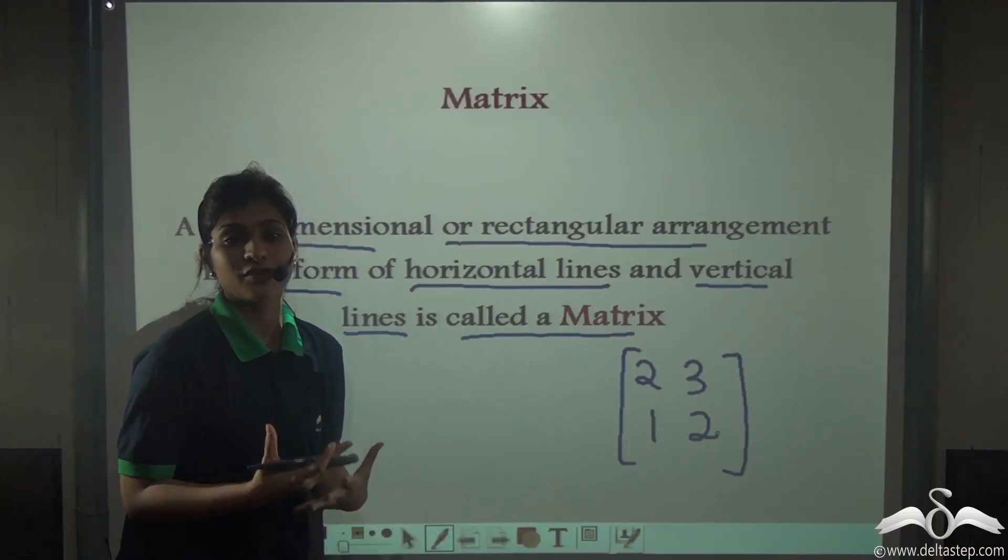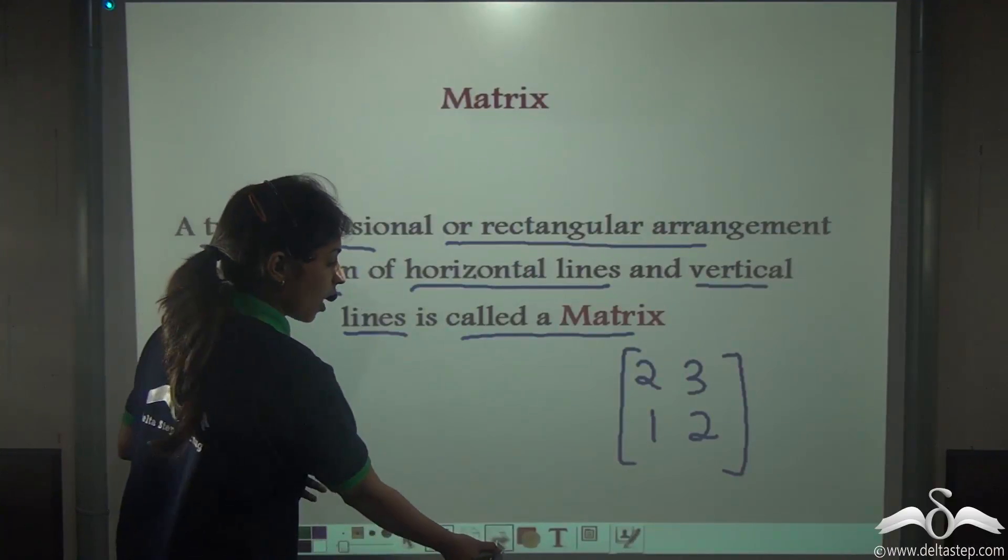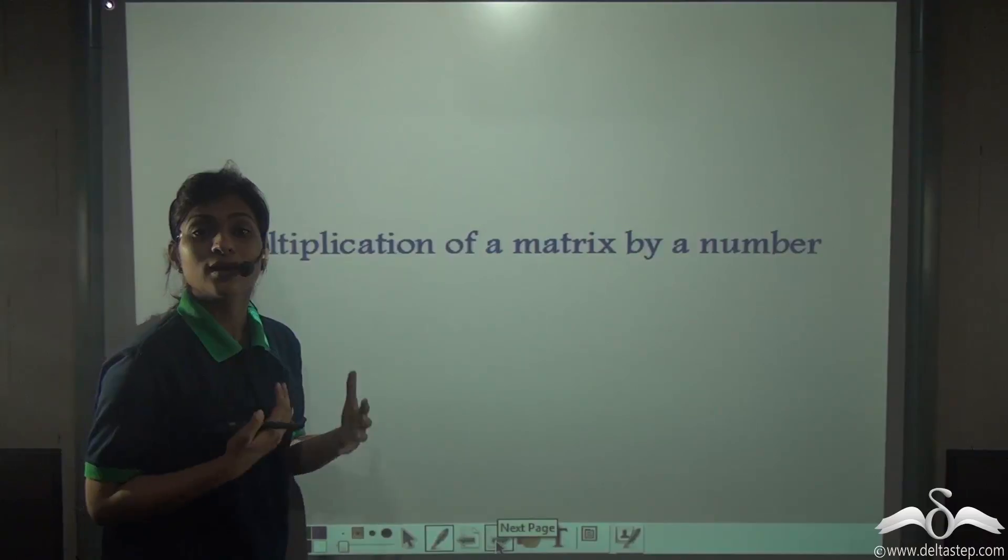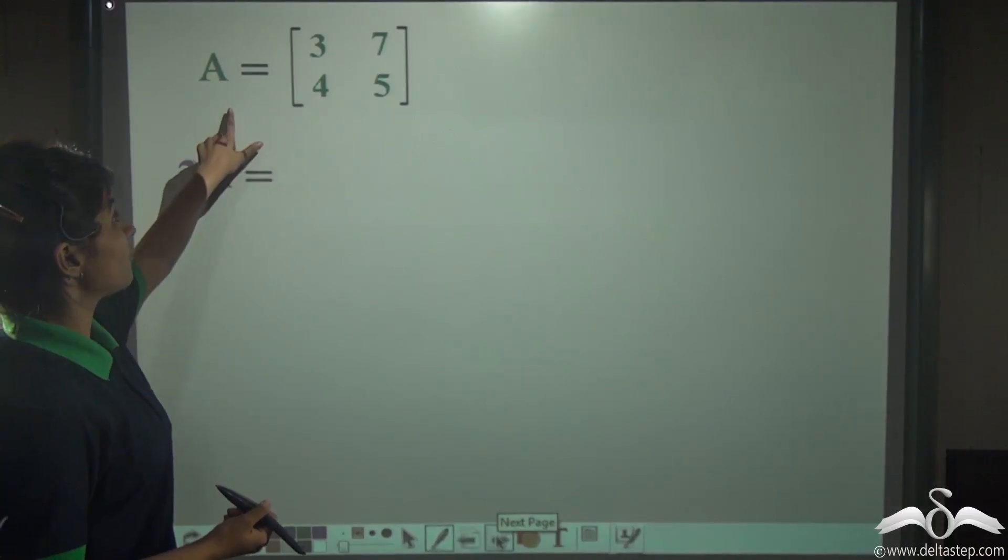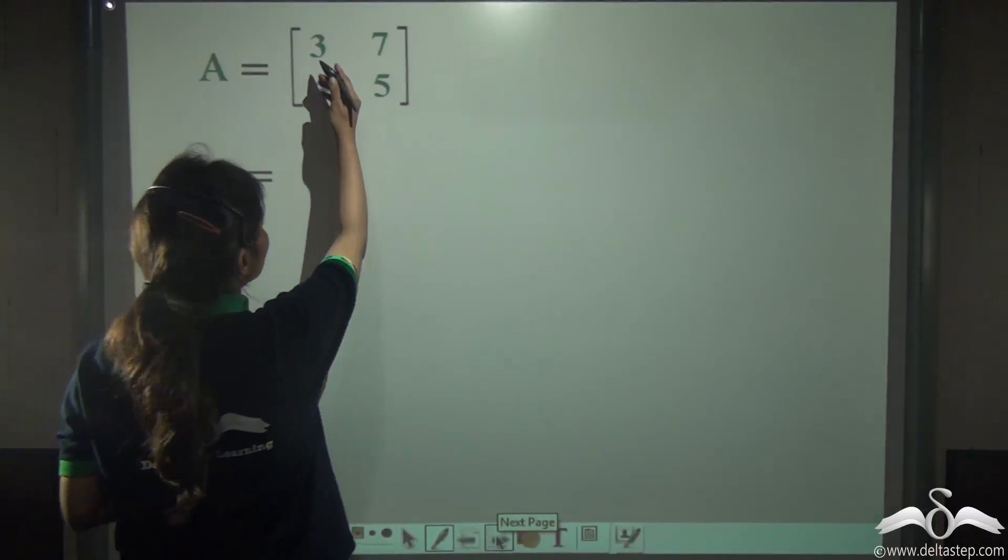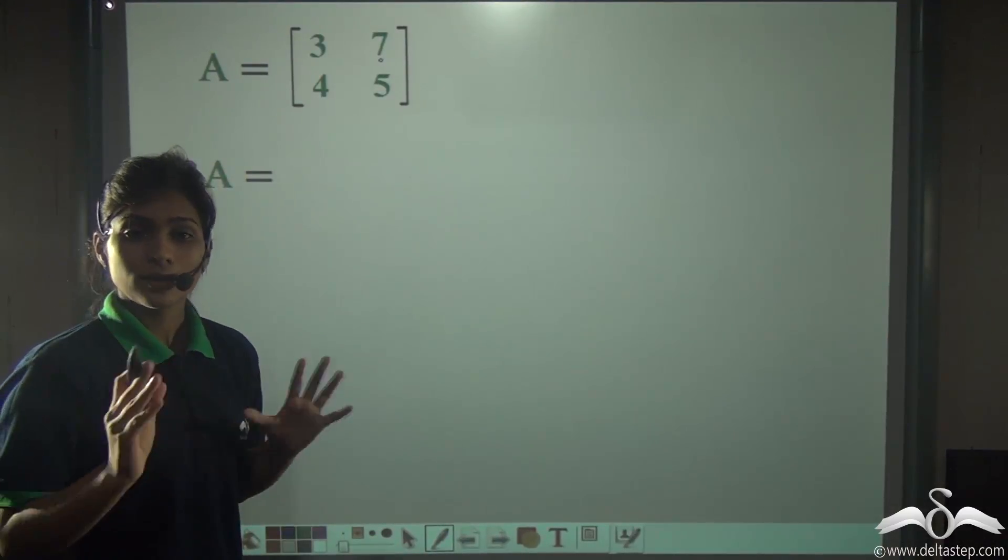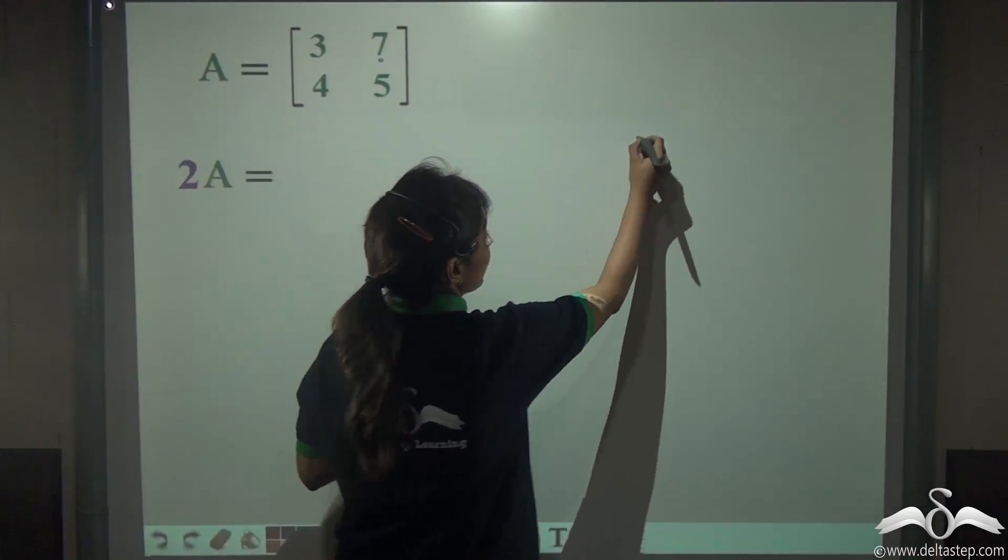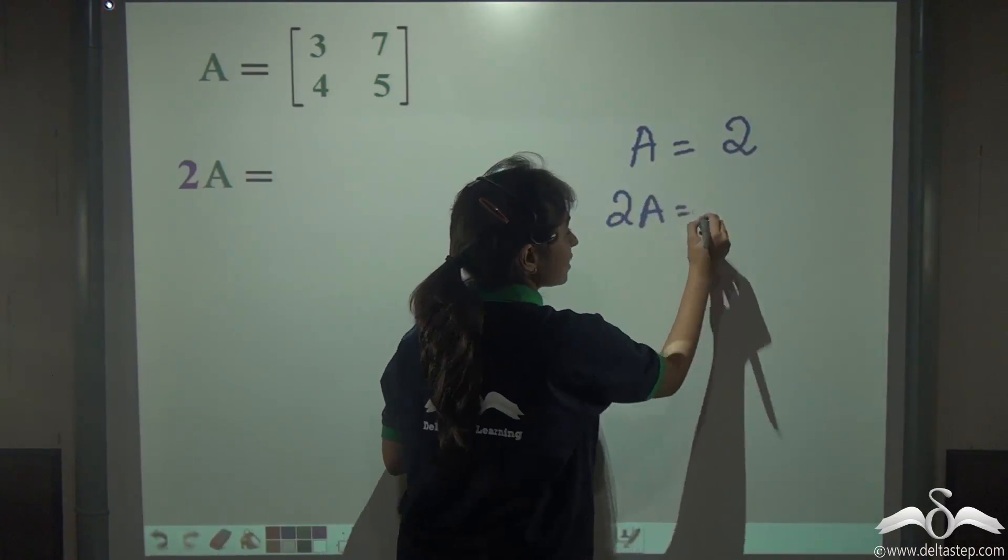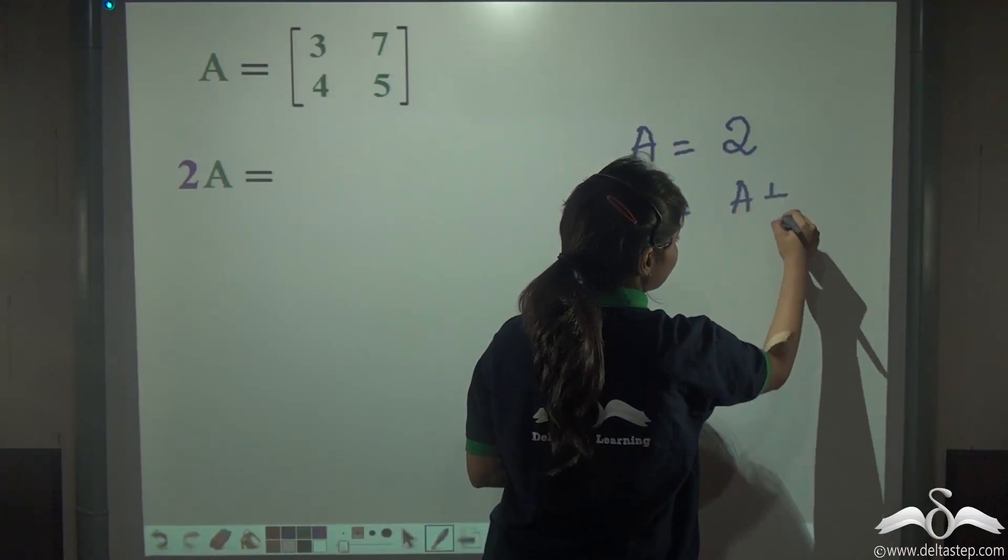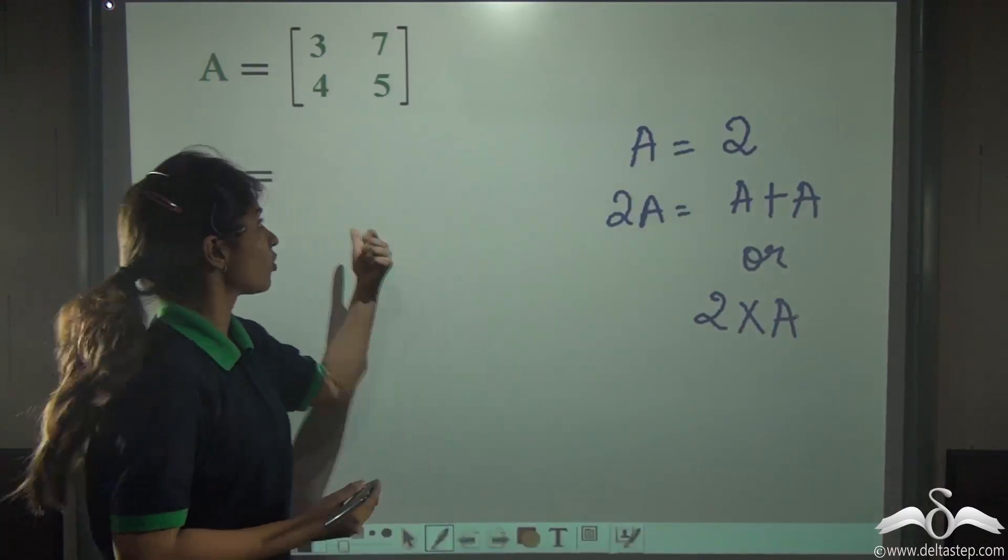In our previous lectures we have learnt how to perform operations such as addition and subtraction of matrices. Today we will learn how to multiply a matrix with a number. Let's see how to do that. The same thing goes for matrices here.